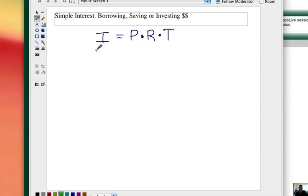The formula for simple interest is I equals PRT.